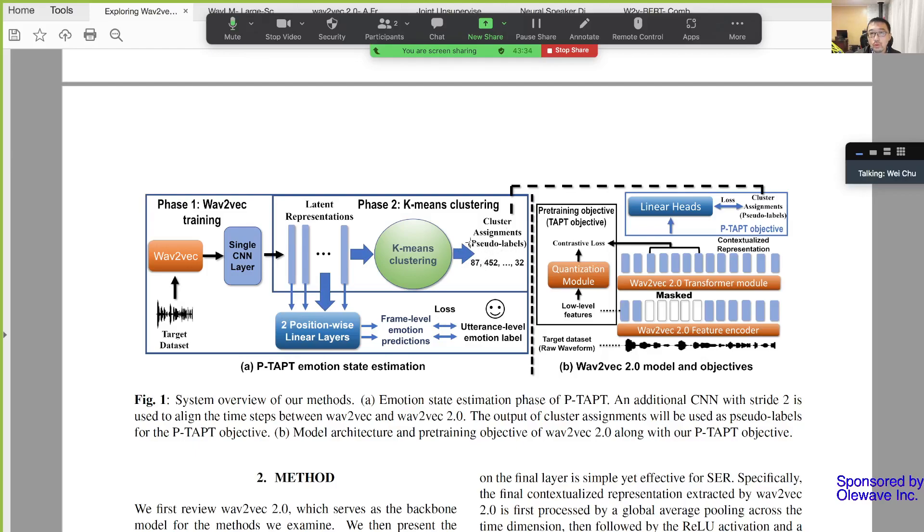Once they got these pseudo-labels, they say, 'Okay, now I can improve my Wav2Vec model.' How? You can see this dotted arc to here. Remember previously when you train the Wav2Vec model, you do have to calculate the contrastive loss, right?